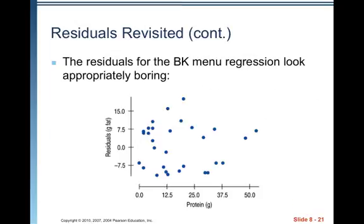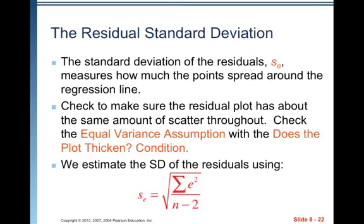The residuals for the BK menu regression look appropriately boring. If you notice zero on the vertical axis there, the points are kind of scattered all around that. There's no pattern to the positive and negative values. It's a nice cloud. That's what you want to see.